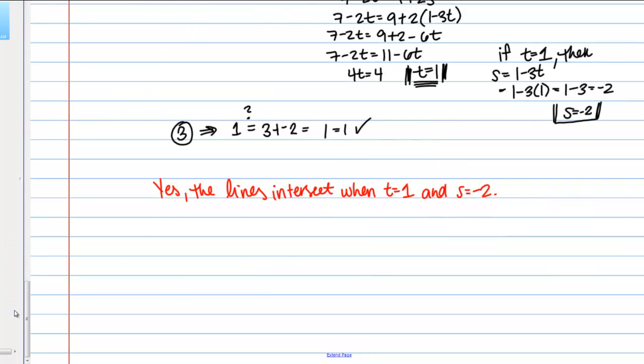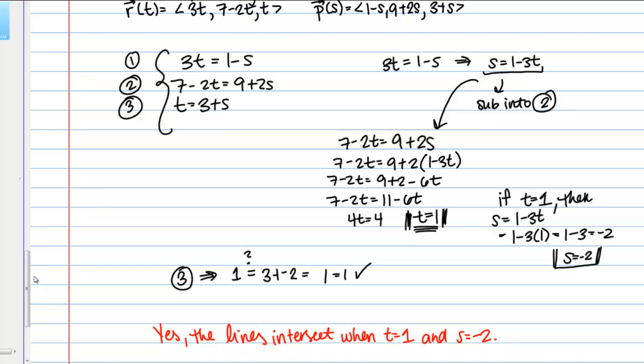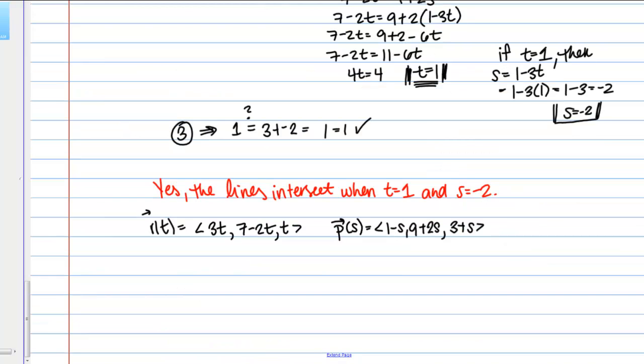And if we wanted to we actually could find the point so let's actually do that really quick. So let me just copy these lines down here. So if I plug in a t value of 1 to R(t) it looks like I should get the vector ⟨3, 5, 1⟩. And if I plug in -2 to P(s) it looks like I should get 1 - (-2) so that's 3. And then 9 - 4 is 5, 3 + (-2) is 1.